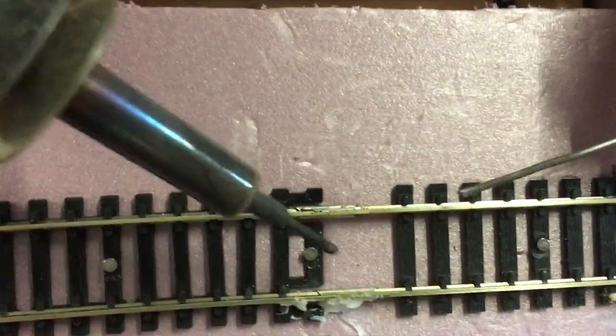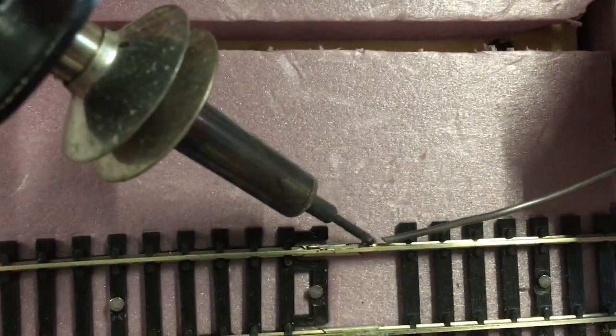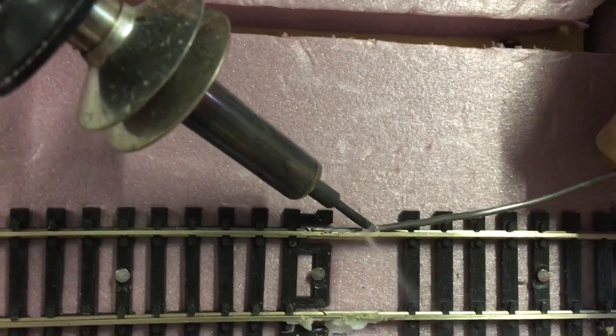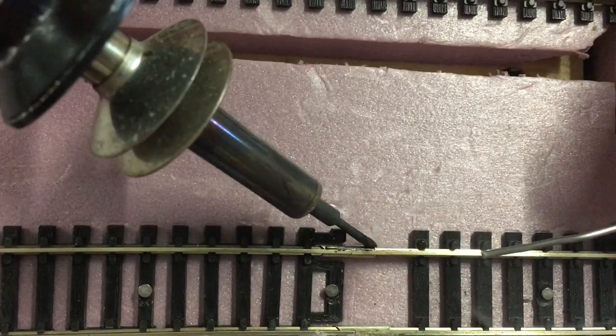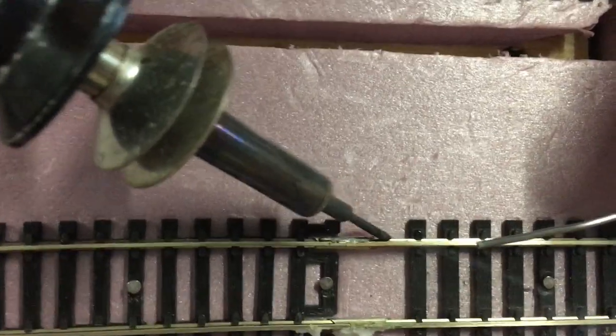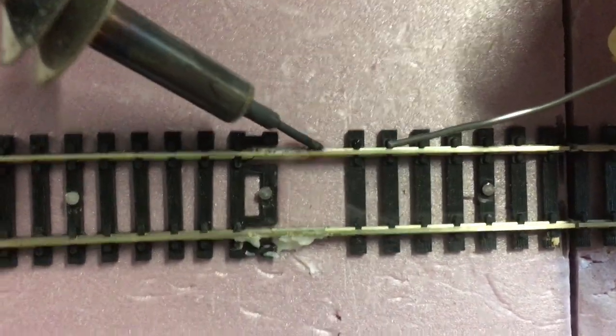Remember this too, guys. You do not want to solder the inside of your rail. You want to solder on the outside only, not the inside. Applying it to the inside can cause your locos and rolling stock to derail.